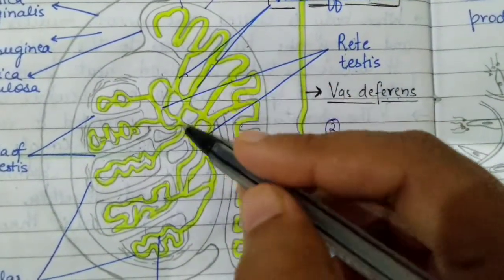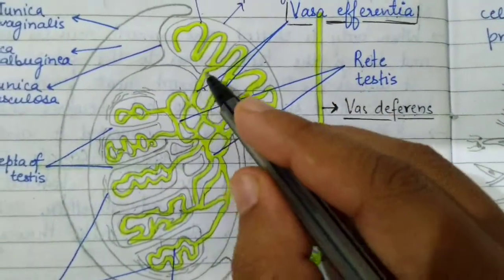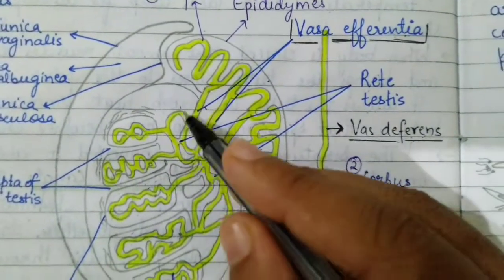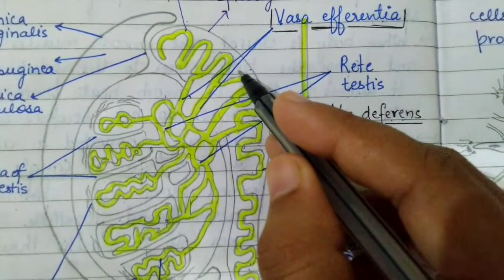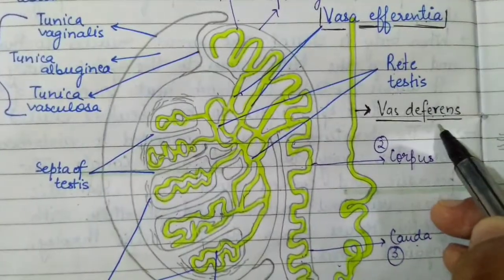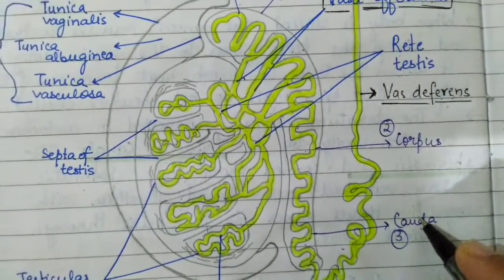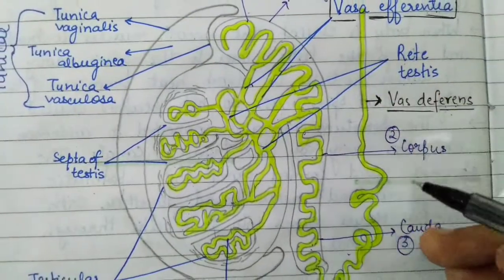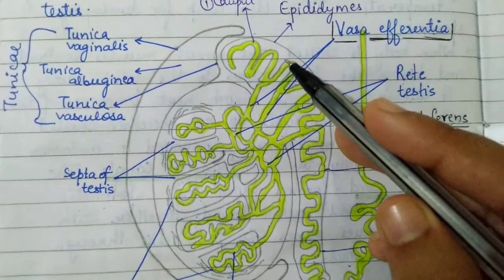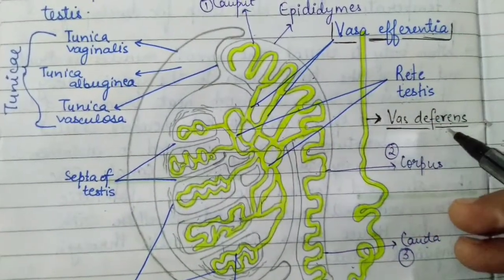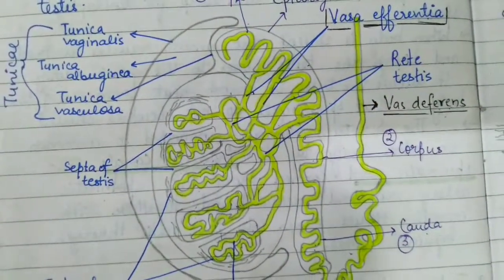The fifth and final difference is function. Vasa efferentia carry sperm from the rete testes to the epididymis. Vasa differentia carry sperm from the cauda epididymis to the ejaculatory duct, passing between the seminal vesicles.